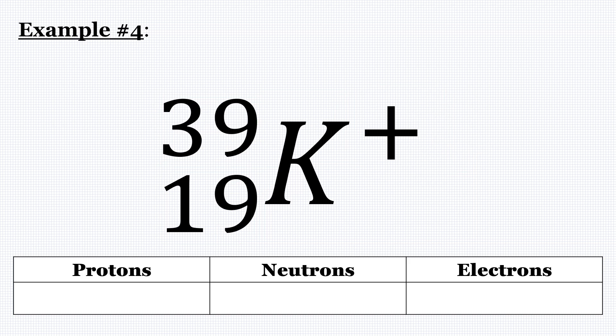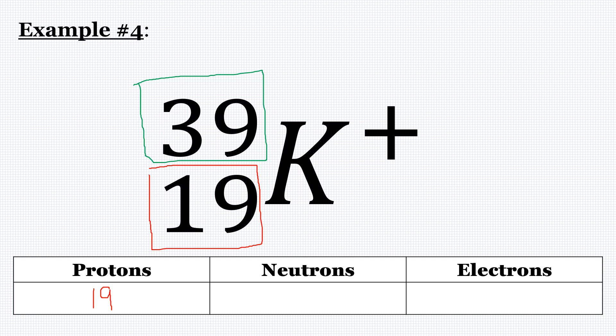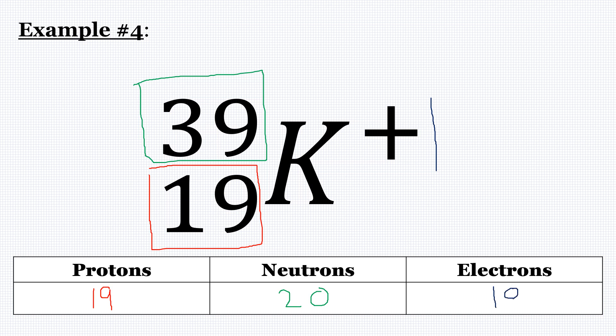One last example: the atomic number is 19, so we have 19 protons. The mass number is 39 — that's protons plus neutrons — so 19 plus 20 gives us 39 neutrons. The charge shown is just a plus, which we assume means positive one. A positive one charge means one more proton than electron, so we would have 18 electrons. This one was a bit tricky.